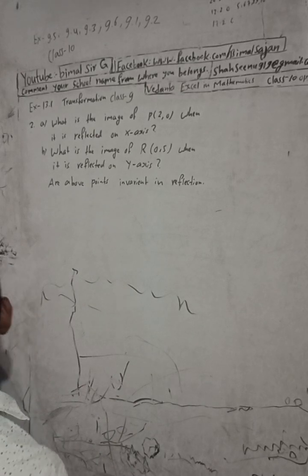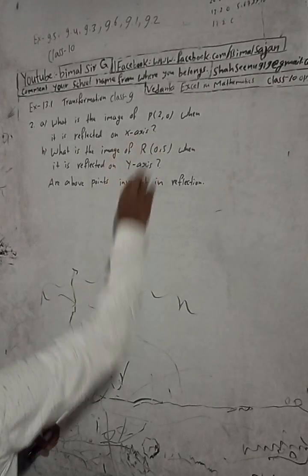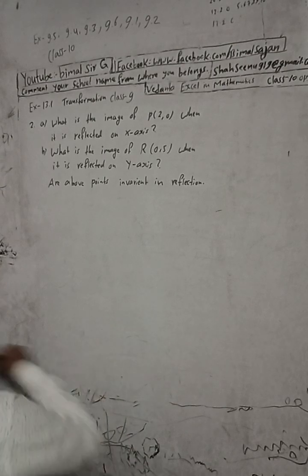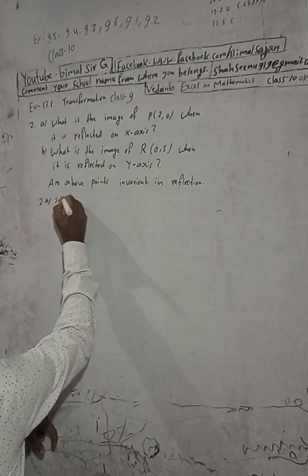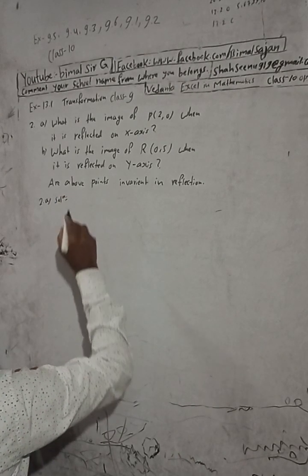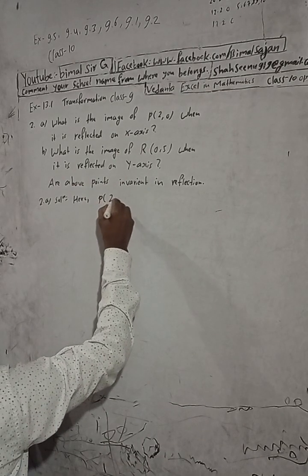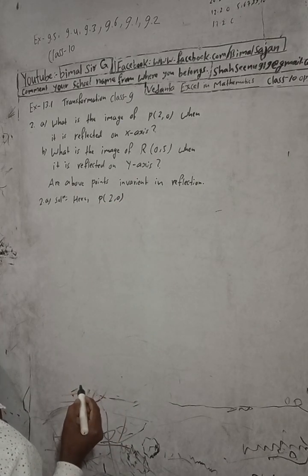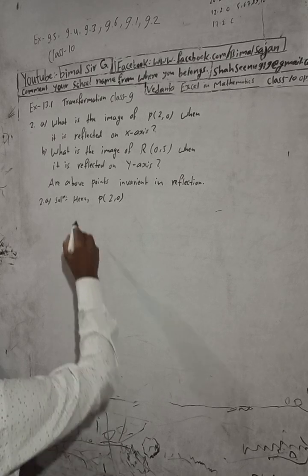For the solution: what is the image of P(2,0) when it is reflected on the x-axis? Here, P is (2, 0), so for reflection on the x-axis...